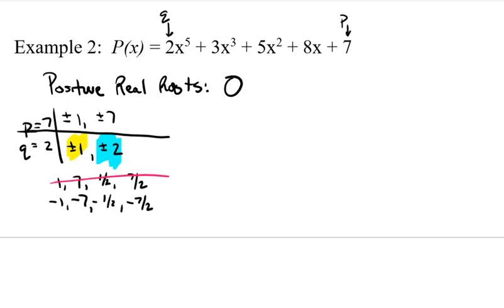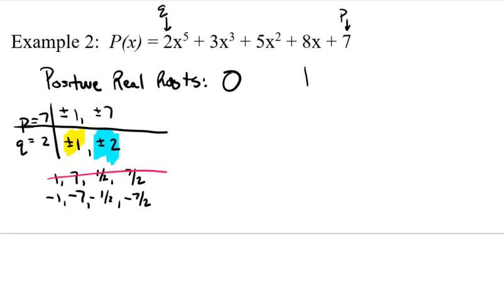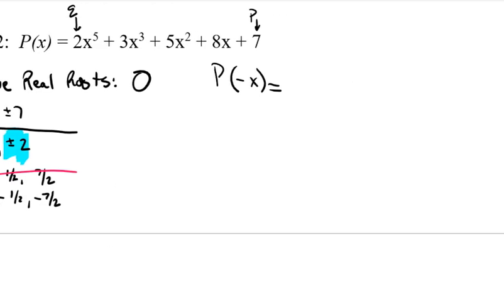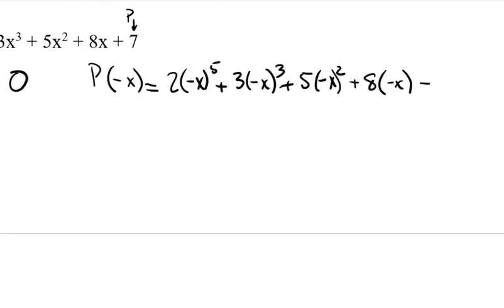Now when we go to look at the number of negative roots, the possibility is there. So we can see from our list that I have potentially four different roots. Now here, check this out, right? So when we go here, so P(x), we're going to replace all of our x's with negative x. So that is going to end up giving us the following polynomial. So we'll have 2 times negative x to the fifth plus 3 times negative x cubed plus 5 times negative x squared, and then plus constant always stays the same.